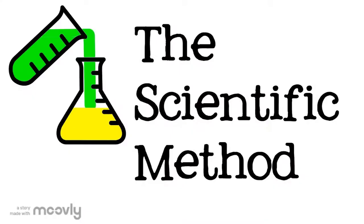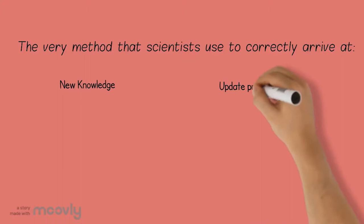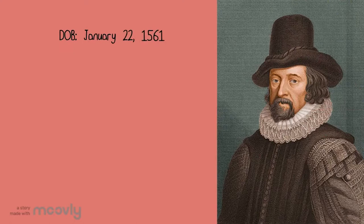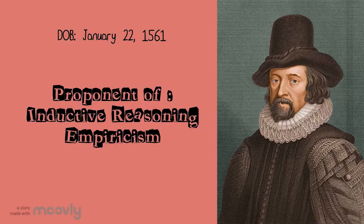So, what is the scientific method? In short, it is the very method that scientists use to correctly arrive at new knowledge as well as to update their previous knowledge about the world. Let us begin with Sir Francis Bacon. He was born in 1561 and is a well-known proponent of inductive reasoning and empiricism, and one of the greatest movers behind the development of the scientific method.